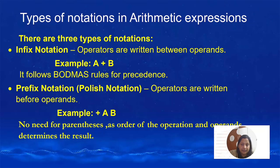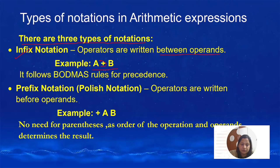What are the notations in arithmetic expressions? In computers we have three types of notations. The first one is infix notation. In infix notation, operators are written between the operands — the same way we write in normal mathematics. Example: A plus B. Here the operator comes in between the operands, and it follows the BODMAS rules.